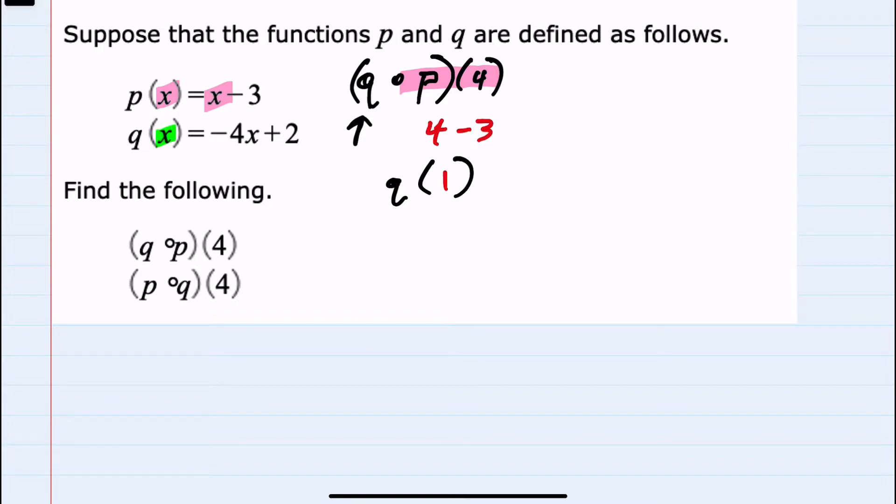So here, plugging 1 into q would give us negative 4 times 1 plus 2. And order of operations, negative 4 times 1 is negative 4. Negative 4 plus 2 is negative 2. So our first composition is negative 2.